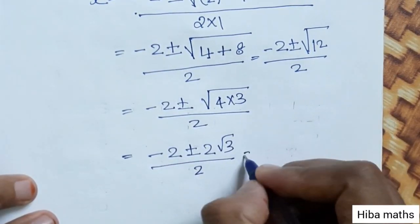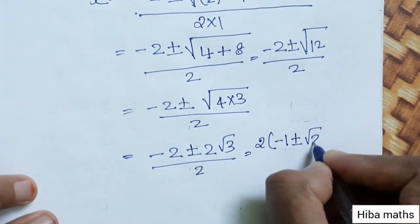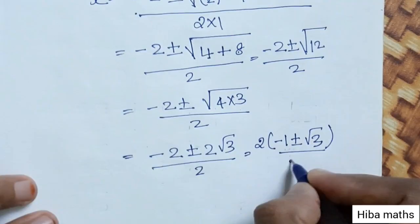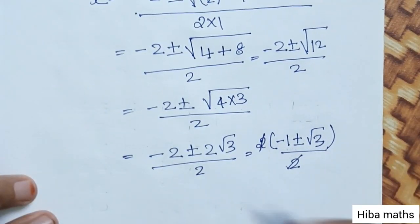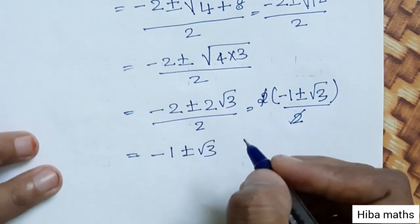If this is 2, there is 2, so 2 cancels and the answer is minus 1 plus or minus root 3.